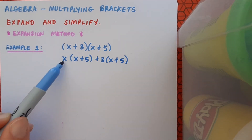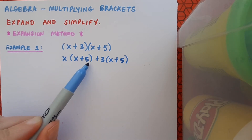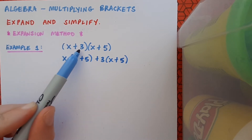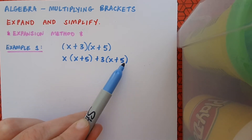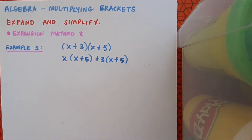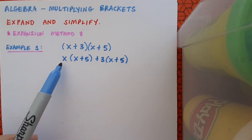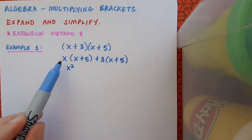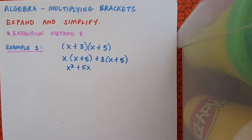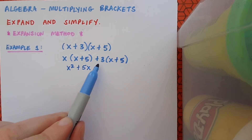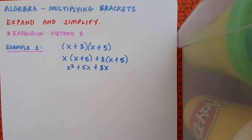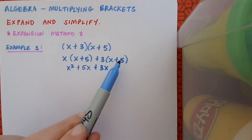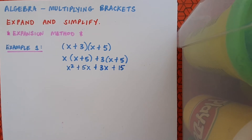So I've got the x from the first bracket multiplied by the second bracket, and the plus 3 from the first bracket multiplied by the second bracket. Now I just multiply as normal. x by x gives x squared. x by plus 5 gives plus 5x. Plus 3 by x gives plus 3x, and plus 3 by plus 5 gives plus 15.